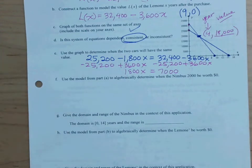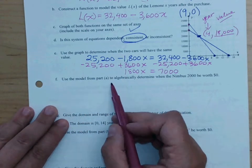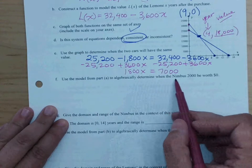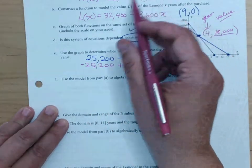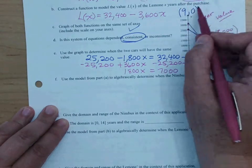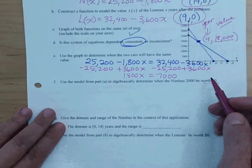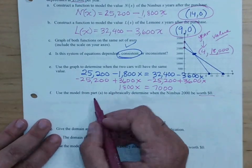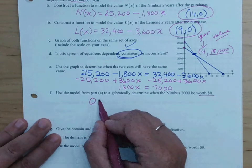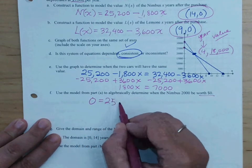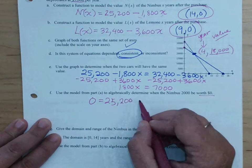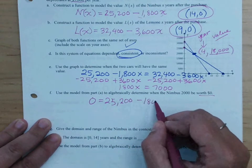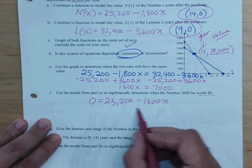Now it's saying, use the model in part A to algebraically determine when the Nimbus will be worth zero. So that's what I actually did before when I found these x-intercepts. So essentially, what we would do is we'd set the value equal to zero, 0 equals 25,200 minus 1,800x.